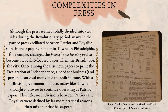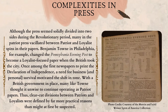Complexities in Press. Although the press seemed solidly divided into two sides during the Revolutionary period, many in the Patriot Press vacillated between Patriot and Loyalist spins in their papers. Benjamin Towne, in Philadelphia, for example, changed the Pennsylvania Evening Post to become a Loyalist-focused paper when the British took the city. Once among the first newspapers to print the Declaration of Independence, a need for business and personal survival motivated the shift in tone. With a British government in place, many like Towne thought it unwise to continue operating as Patriot Papers. Thus, clear-cut divisions between Patriots and Loyalists were defined by far more practical reasons than might at first be suspected.